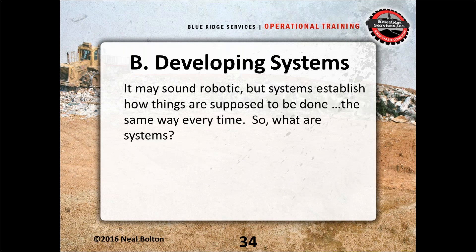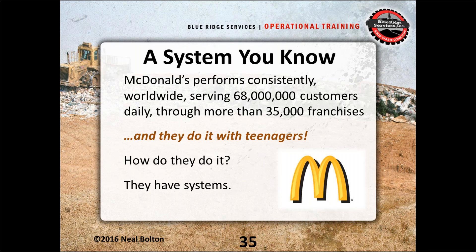The next step in developing a succession plan is to have systems. McDonald's has an incredible system — they serve 68 million customers a day through more than 35,000 franchises, mostly with teenagers, and with a lot of turnover and not a lot of training time. How do they do it? They have systems. They say: here's what you wear, here's what you say, here's how you run the cash register, here's how you make french fries, here's how you cook a hamburger and wrap it up. When they have lots of turnover, their systems make that work.